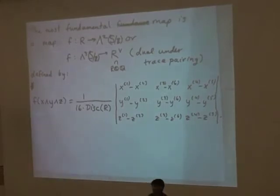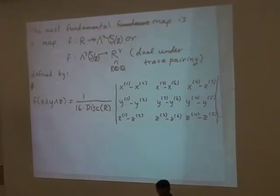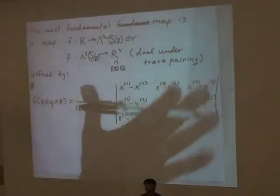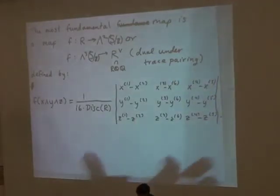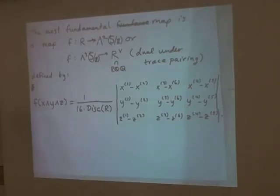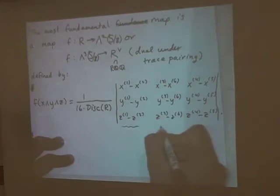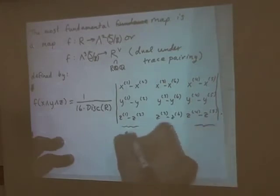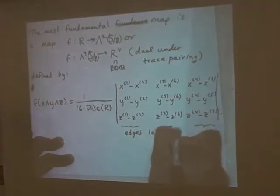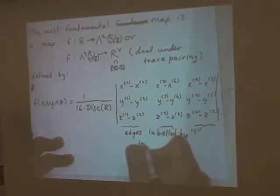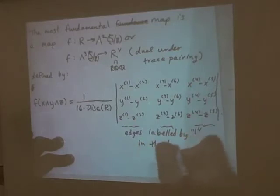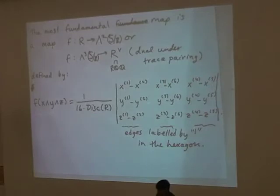I'll explain how the fundamental Cayley resolvent is actually a higher-degree function of this most fundamental map. These are the edges labeled by one in the hexagon — that complete graph on six vertices. I'm calling it a hexagon, but it's more precisely a complete graph.